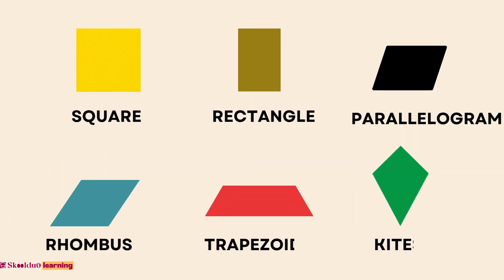Examples of quadrilaterals are squares, rectangles, parallelograms, rhombuses, trapezoids, kites, etc. Let us review some quadrilaterals and their properties.